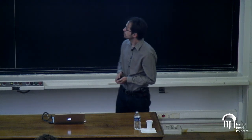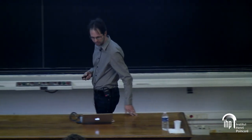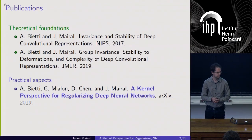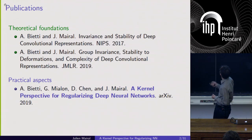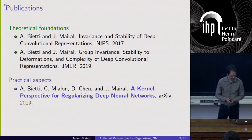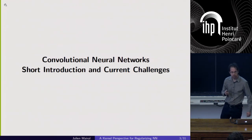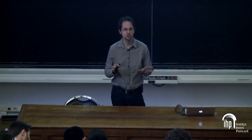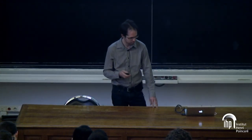This work basically follows some theoretical work developed with a PhD student, Alberto Bietti, who already established some links to study the invariance and stability to deformations of convolutional neural networks. More recently, what we did was to extend this theory to develop some practical tools. This is still not published but is on archive.